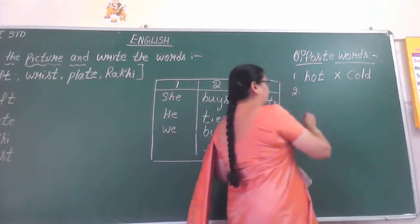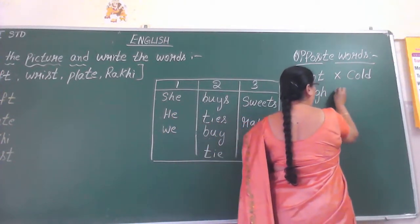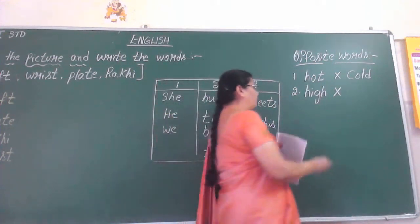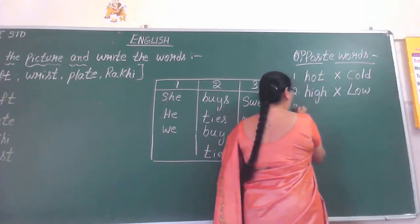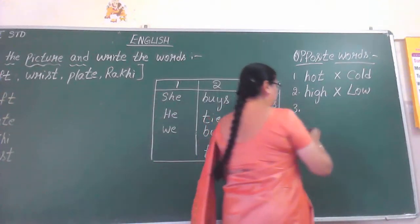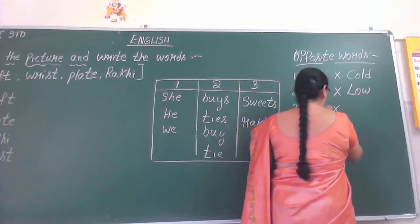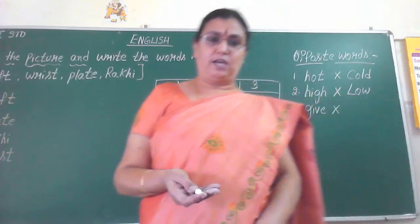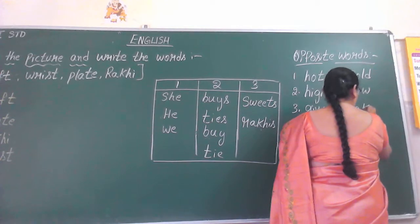The second word is high — H-I-G-H. What is the opposite of high? Low — L-O-W. What is the third opposite word? Give — G-I-V-E. The opposite of give is take — give and take, you should give and take. The opposite of give is take — T-A-K-E.